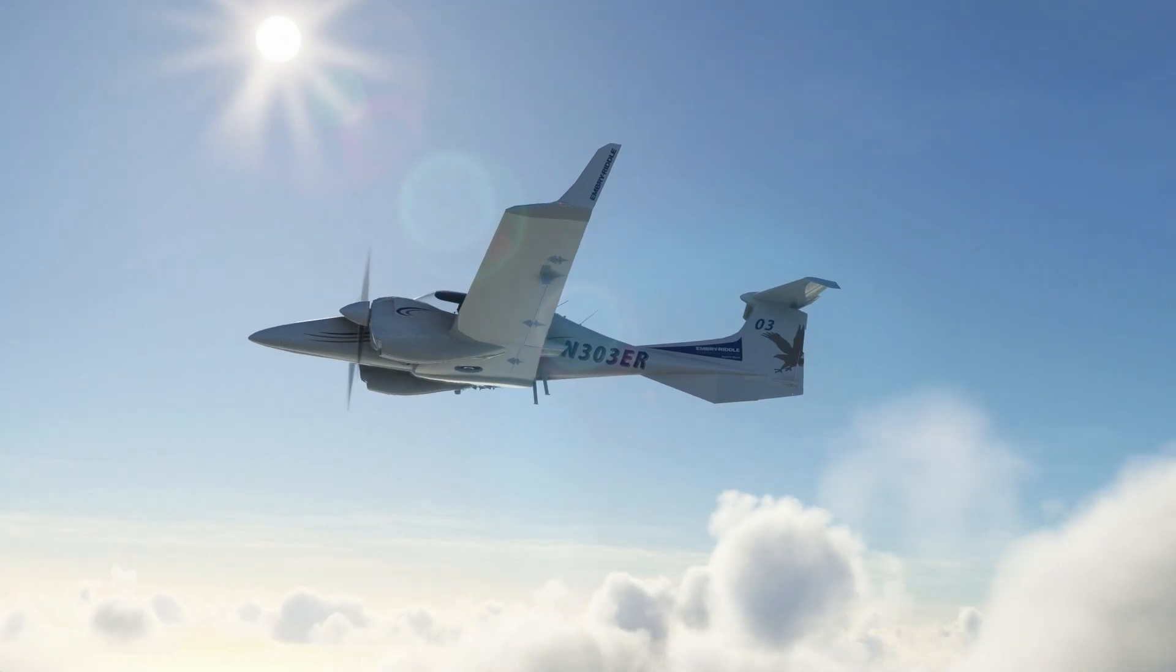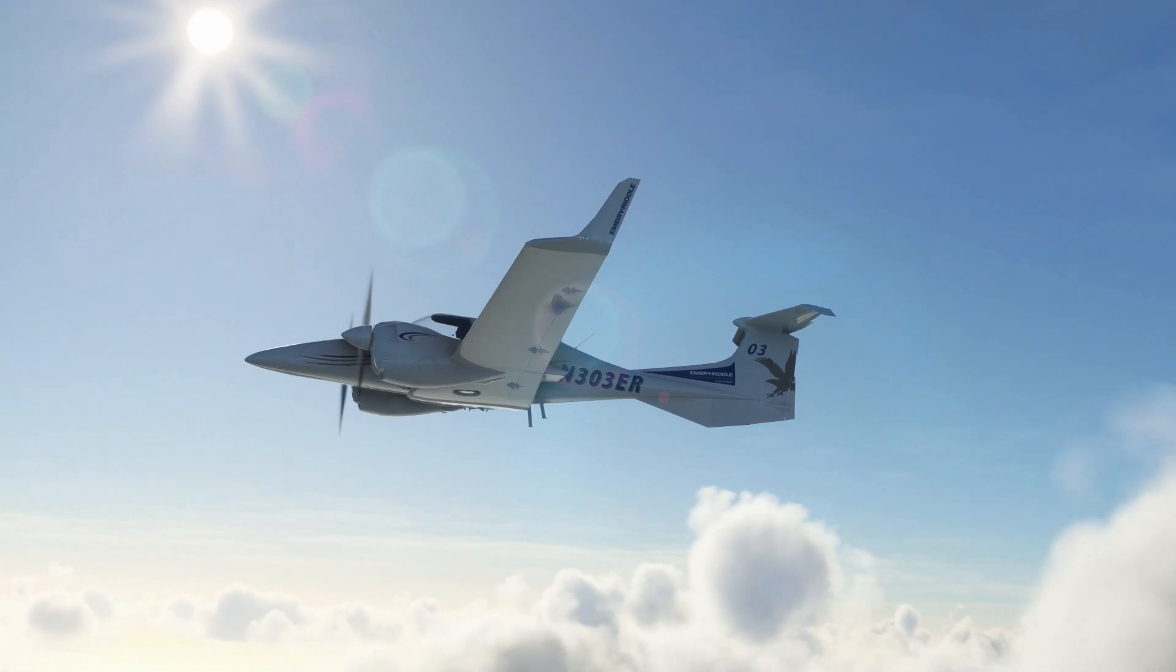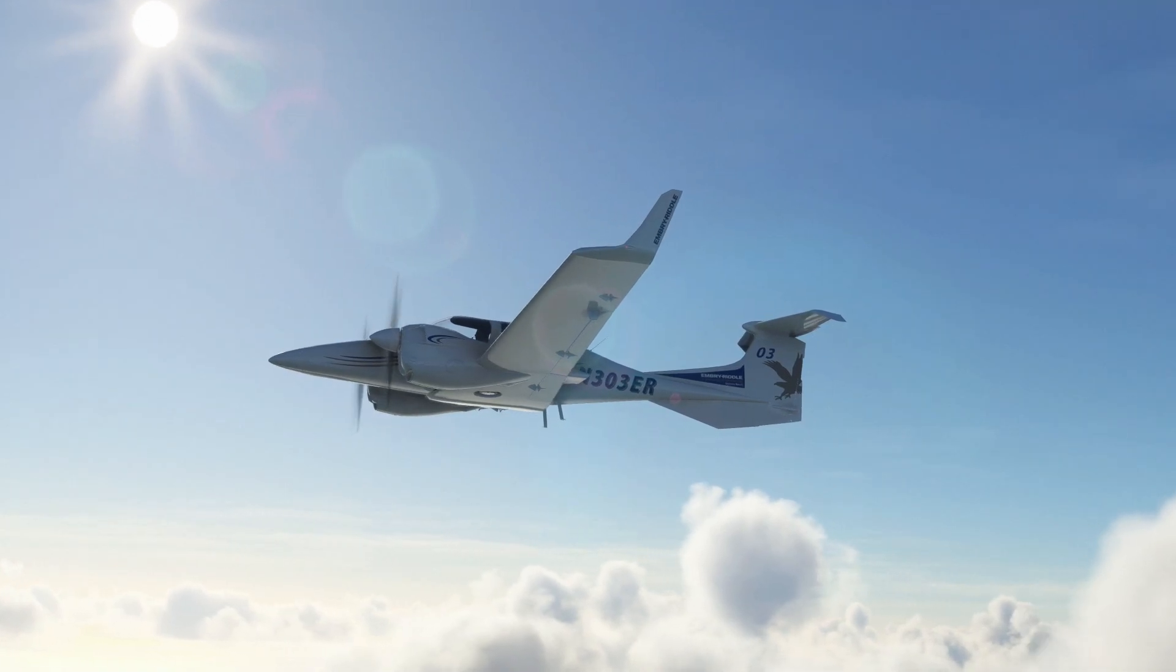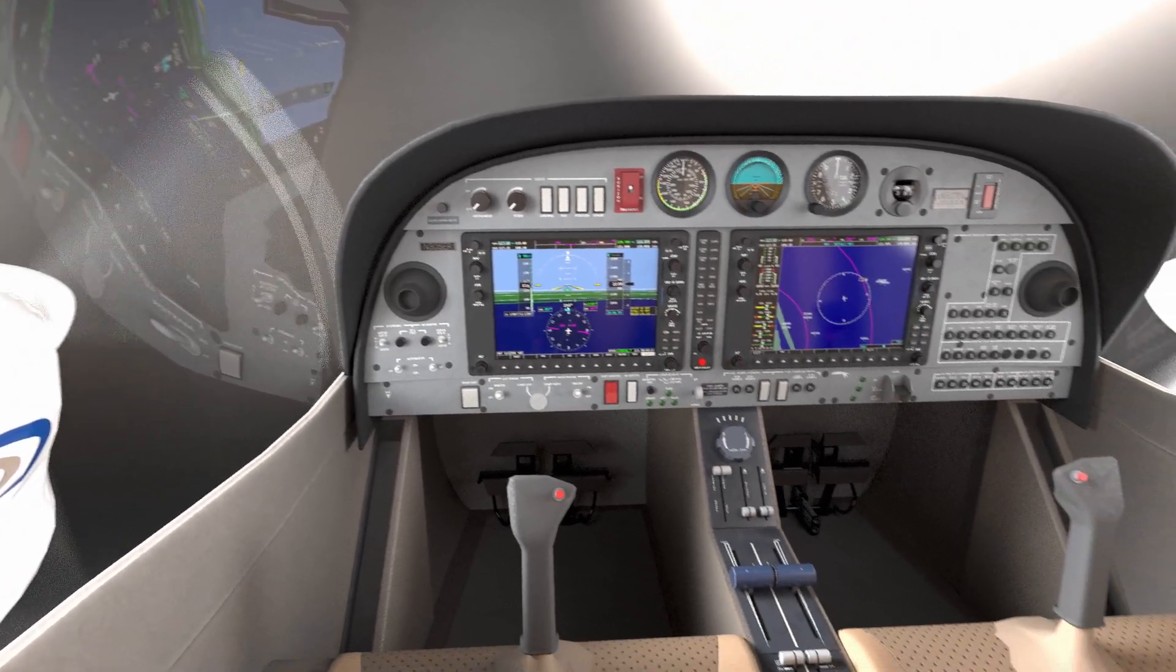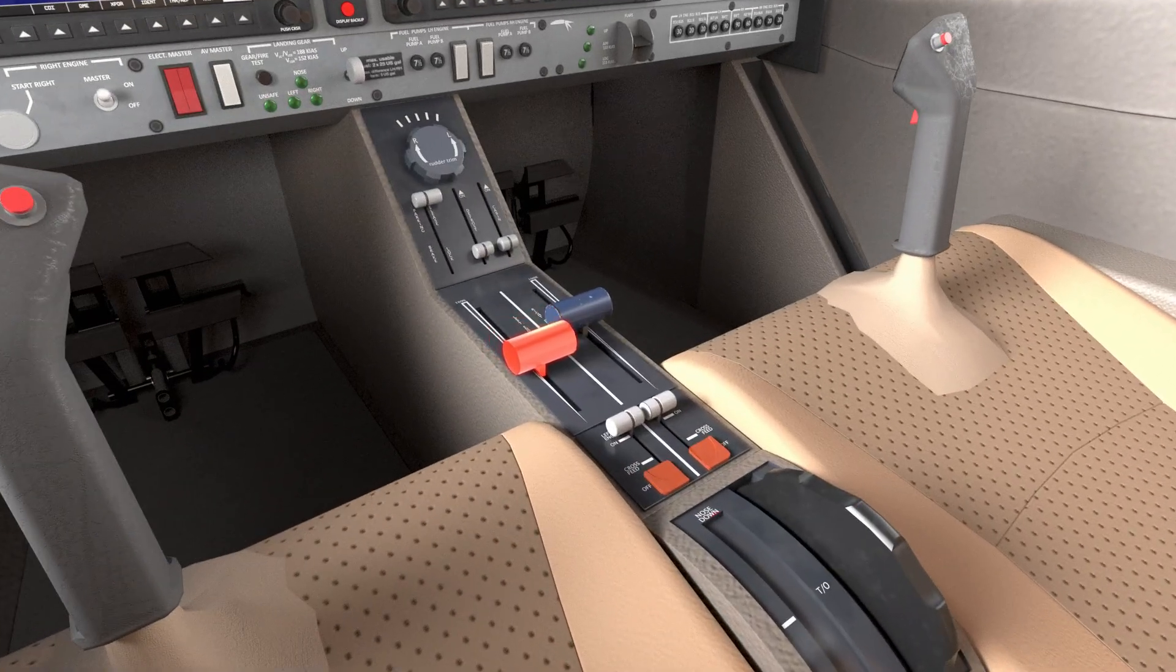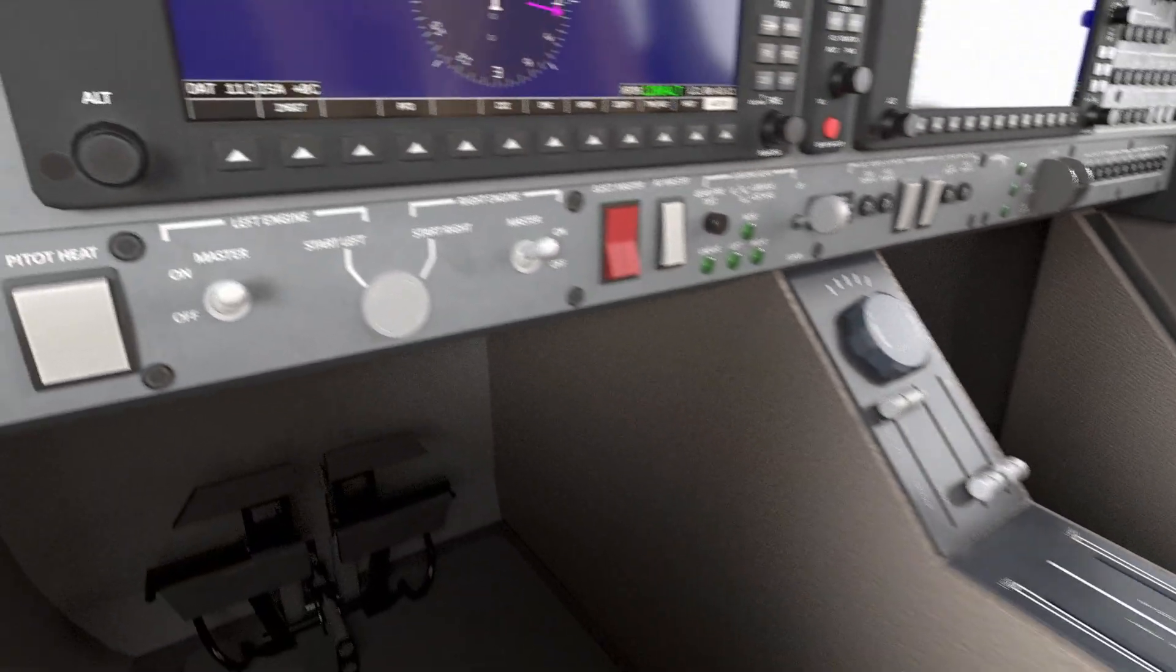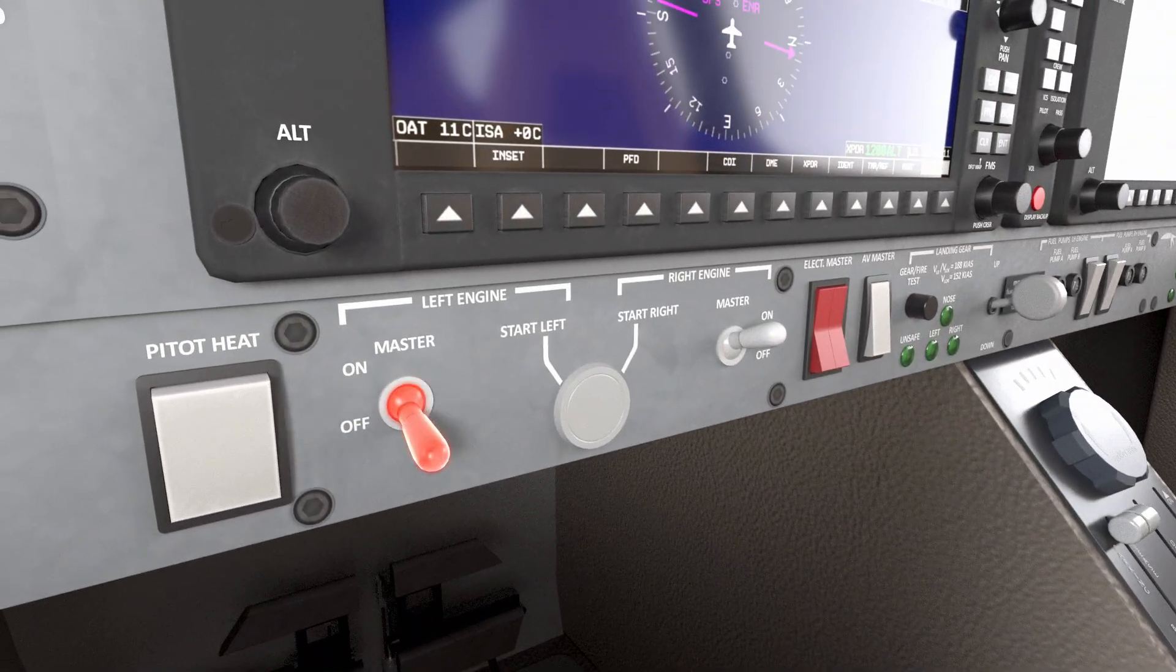Feathering helps maintain better aircraft control and allows for safer single-engine operations. To feather an engine's propeller for the DA42, the power lever must be brought to idle and the engine master switch must be placed in the off position.